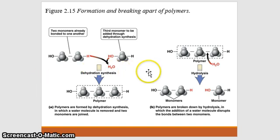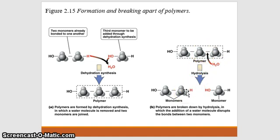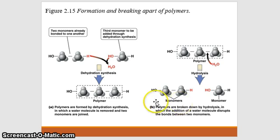Polymers are broken down through the opposite process called hydrolysis. A water molecule is used and broken apart, splitting the chemical bond between a monomer and the rest of the polymer. The hydrogen attaches to one side and the hydroxide to the other, separating the monomer from the chain. A helpful mnemonic: 'lysis' means to cut, 'hydro' means water — so hydrolysis literally means to cut with water.